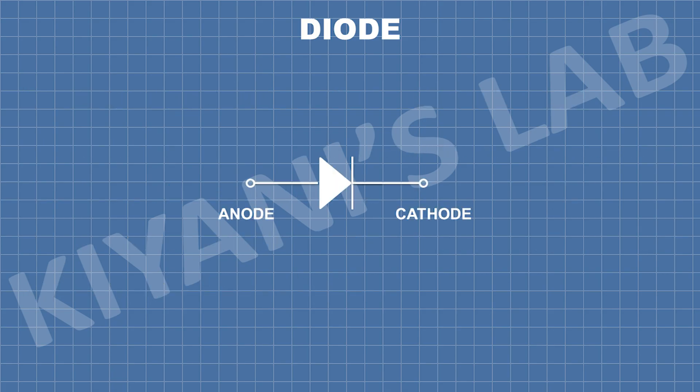This is the symbol of a diode. Diode has two terminals — the positive terminal which is known as anode, and the negative terminal which is known as cathode.